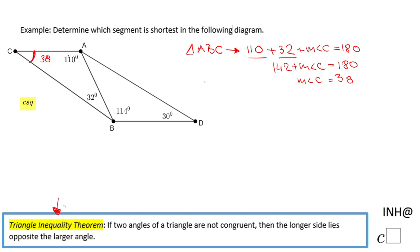Now I can look at which side is the shortest. Angle 32 is the smallest in this triangle, that means AC (the opposite side) is the shortest.